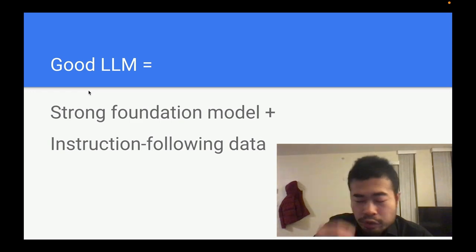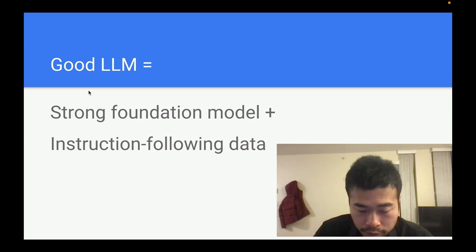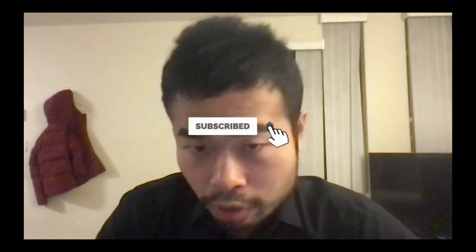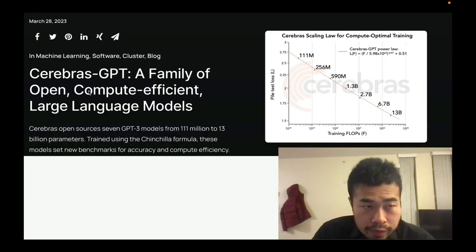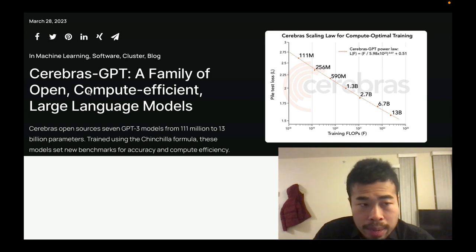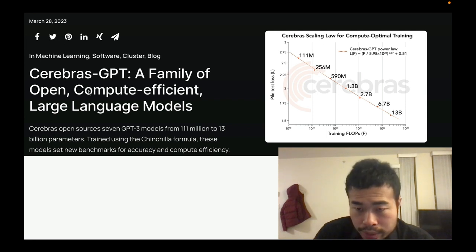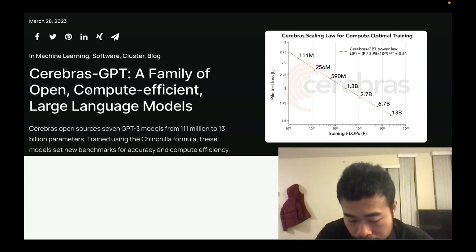So what kind of resources do you have to train this kind of model, in terms of models available for commercial or academic users? First of all, you need to find a very good foundation model. There's a company called Cerebras AI — they announced a model called Cerebras GPT. It's a family of open-source, compute-efficient large language models. These are foundation models that probably don't have instruction following capabilities, which is why you need instruction following data.